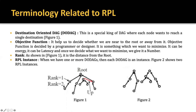Rank shows the distance from the root in figure one. An RPL instance is when we have one or more DODAGs — each DODAG is an instance. Figure two shows how RPL instances are formed: the whole sensor network is divided into two DODAGs, each with its own root, and these are the two RPL instances. The DODAG ID: each DODAG has an IPv6 ID of 128 bits, given to its root only. As long as the root doesn't change, the ID also doesn't change.